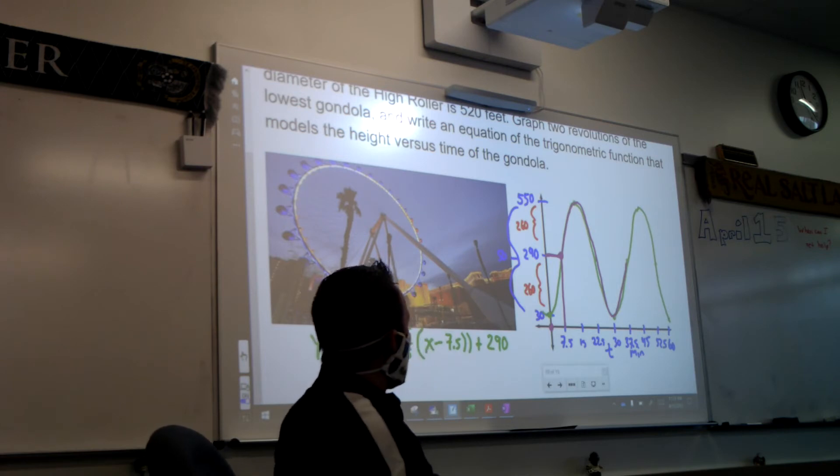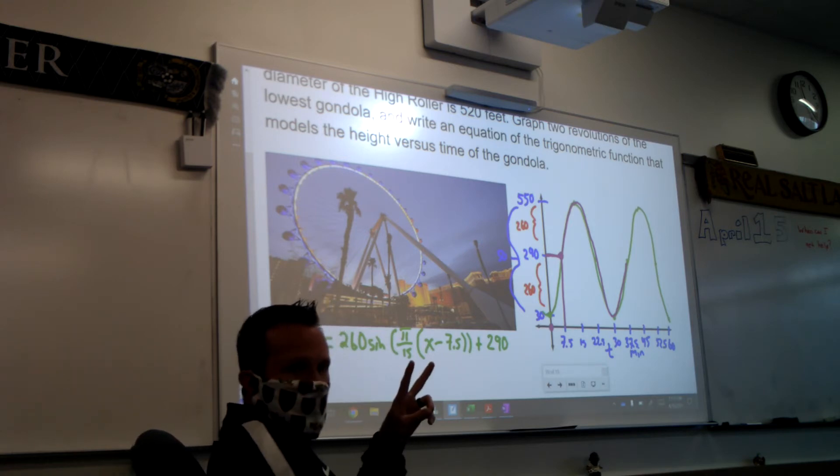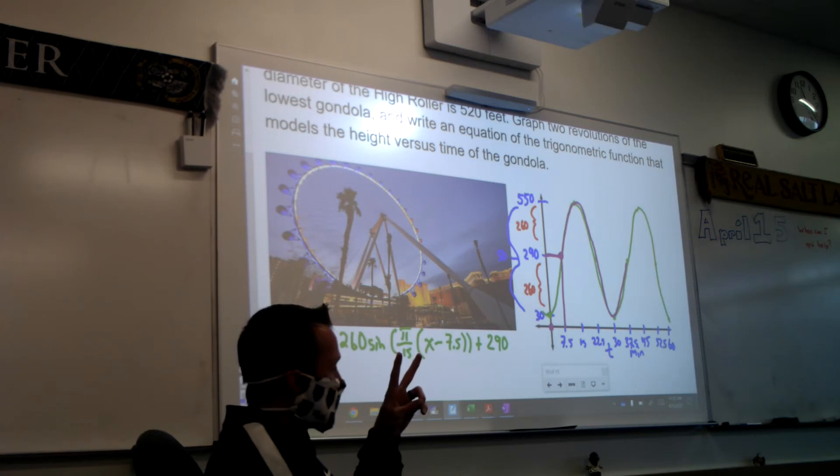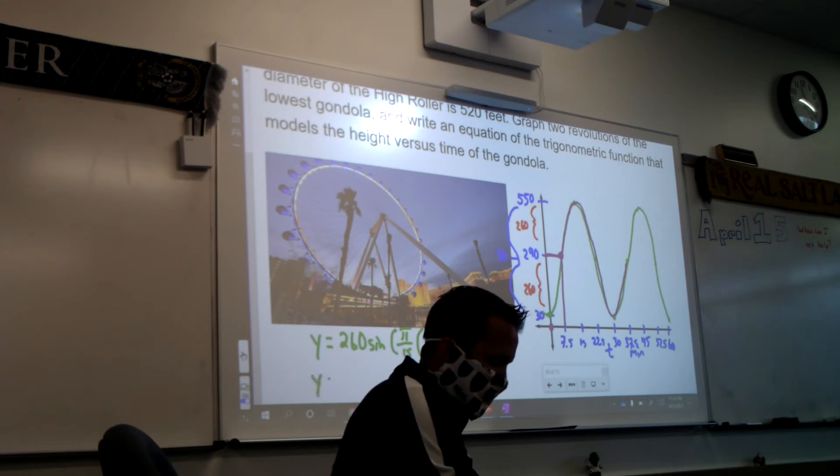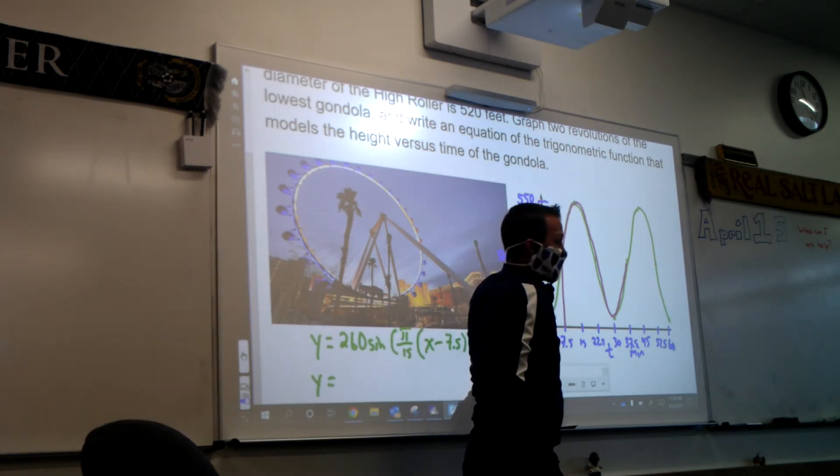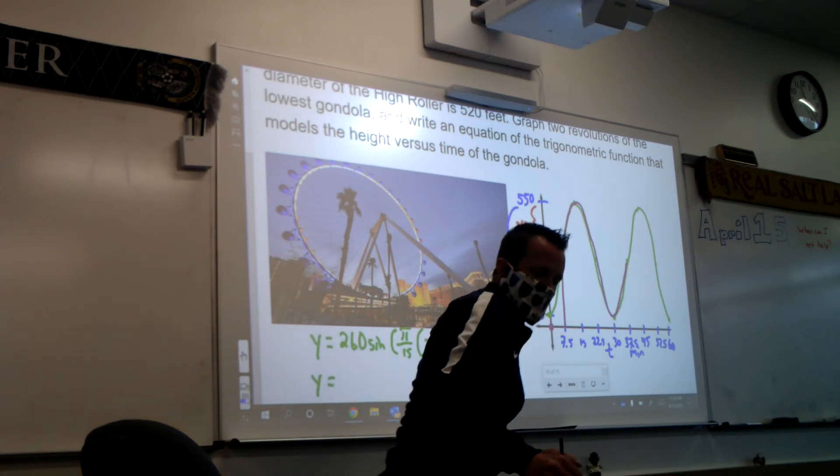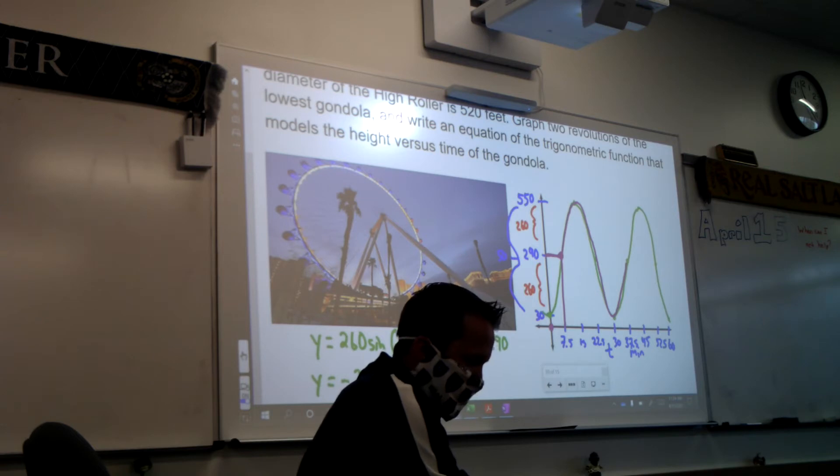Alright, that would be how we write it with sine, which basically we had all that data, we just had to write it down. If I wanted to turn this into cosine, I would make two changes. What would be the changes? You would remove the shift. I don't need to shift it anymore. And you would change from sine to cosine. But cosine starts at its maximum. And we want to be at the minimum, so what do we have to do? Flip it. Flip it with the negative. So it would be negative 260, cosine, pi over 15 times x, plus 290.